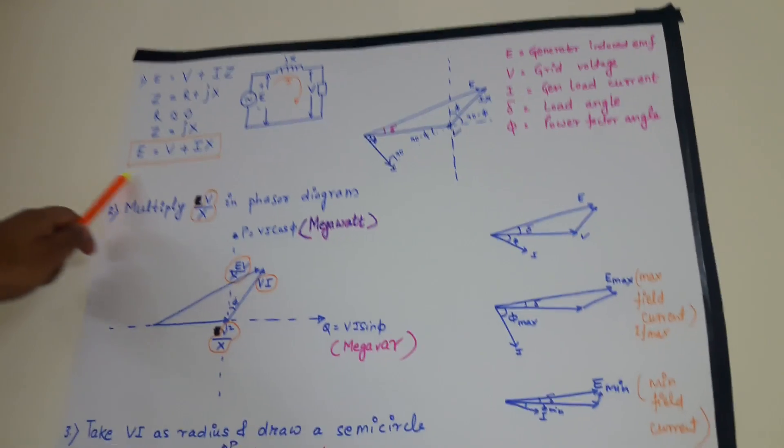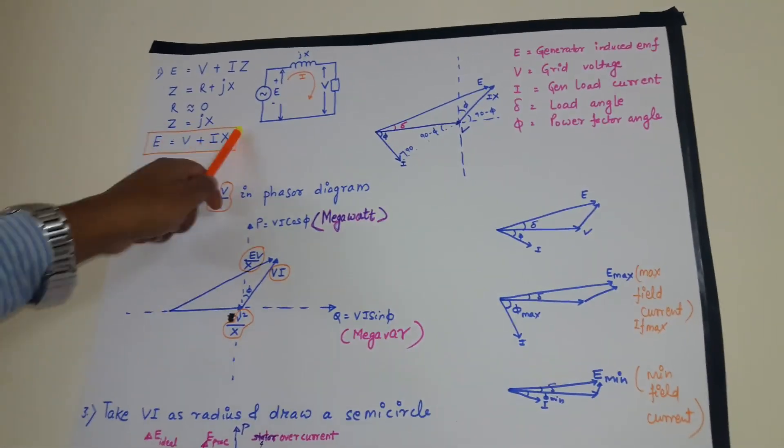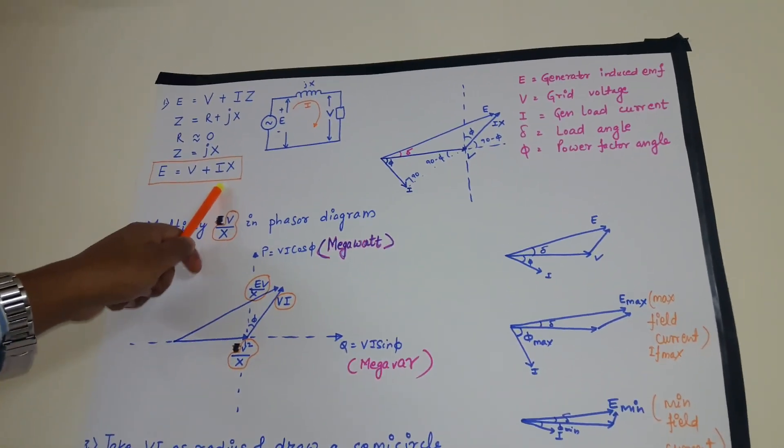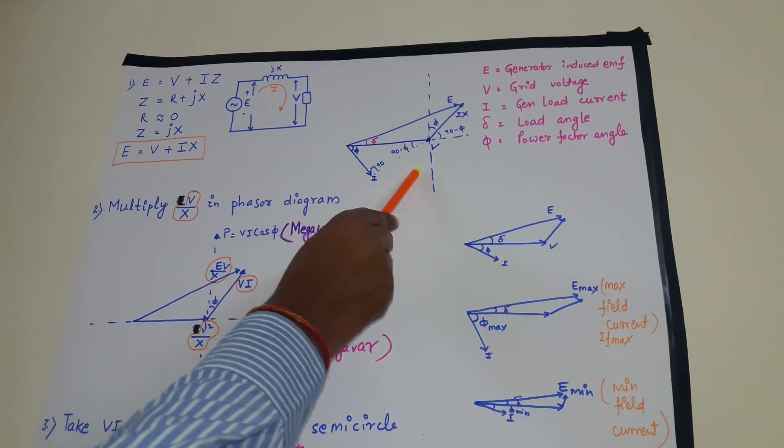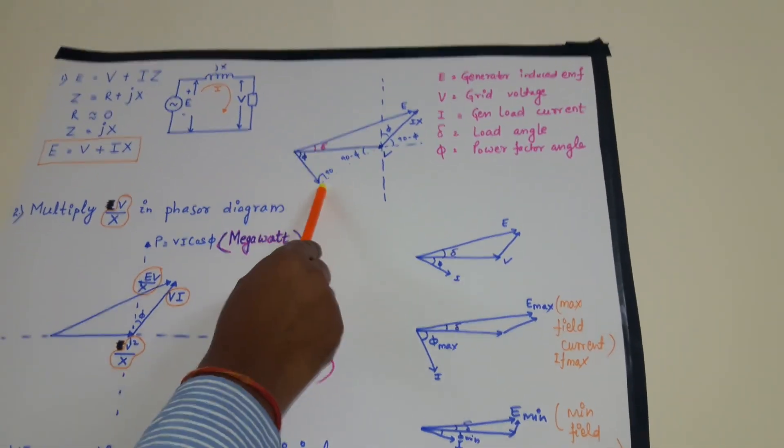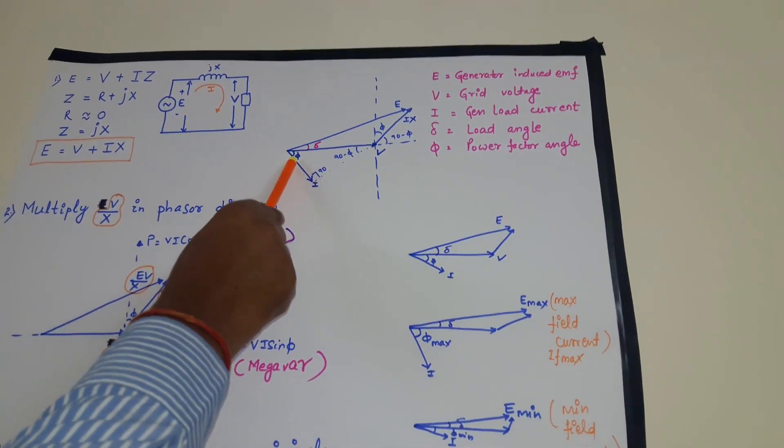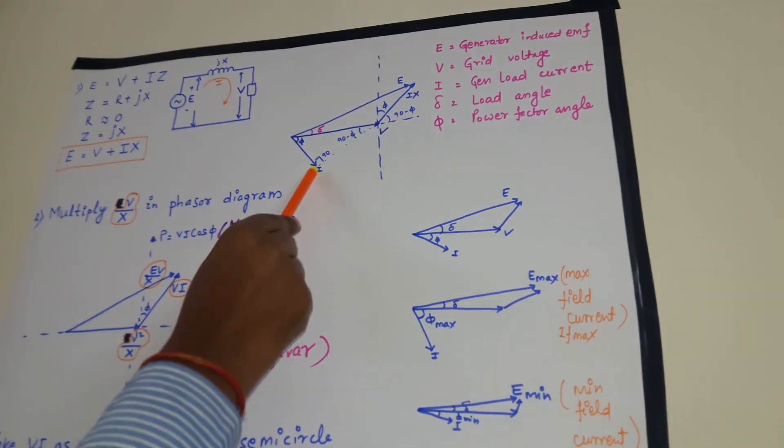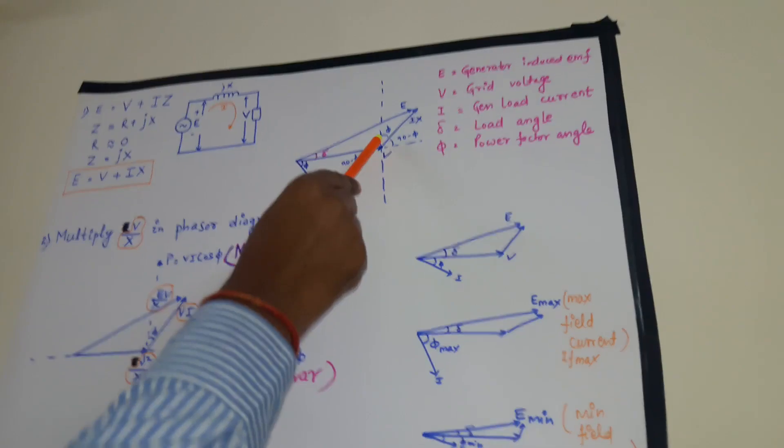Now I want to draw the phasor diagram of this equation E equals to V plus IX. Phasor diagram will be like this. This is V. This is I operating at a power factor angle of phi.